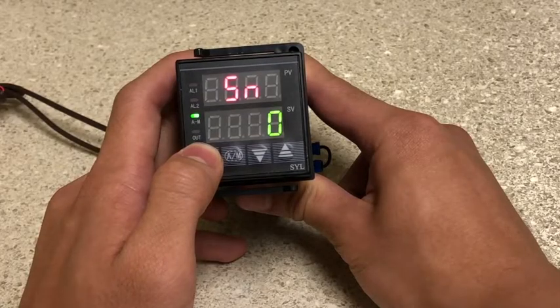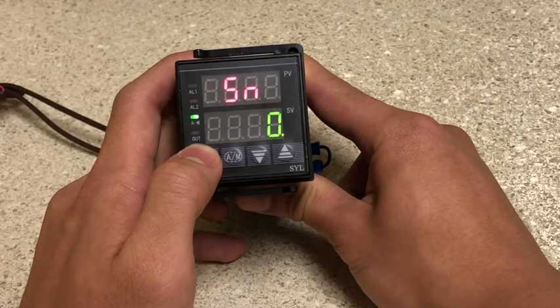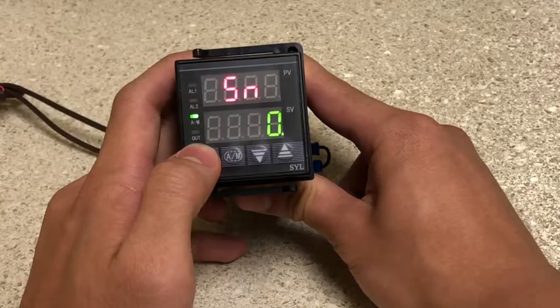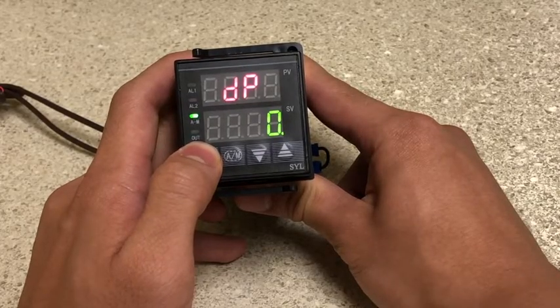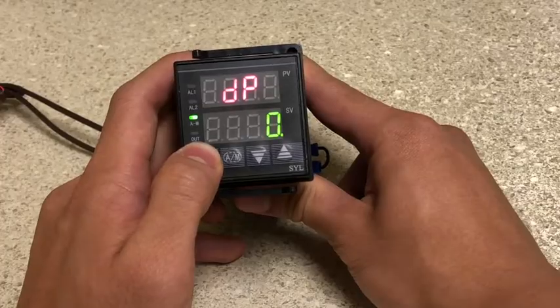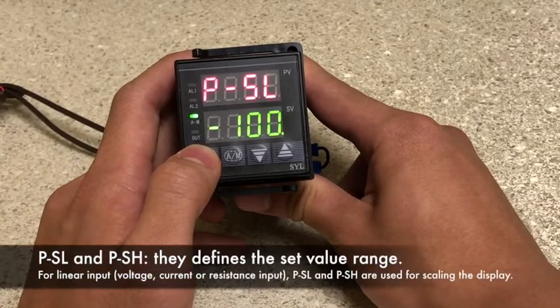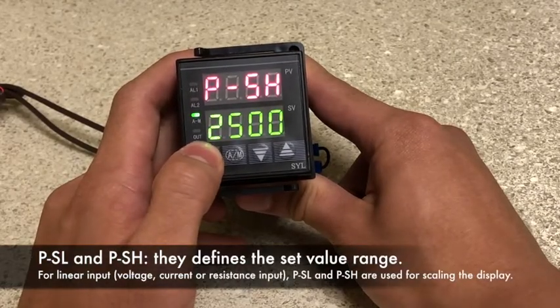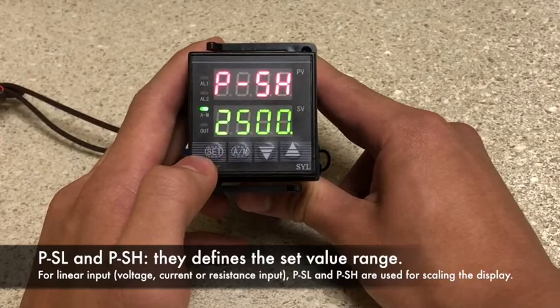SN is sensor. Zero is for K-type thermocouples and 21 is for PT100 RTD sensors. DP is for decimal point position. PSL is for the display low limit. PSH is for the display high limit.